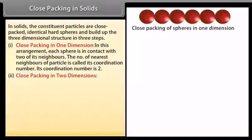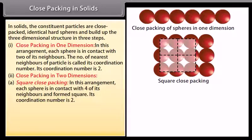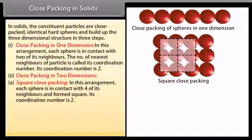In close packing in two dimensions, type A is square close packing. In this arrangement each sphere is in contact with four of its neighbors and forms a square pattern. Its coordination number is 4.